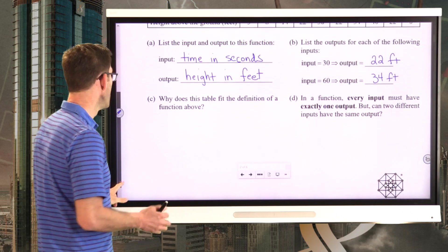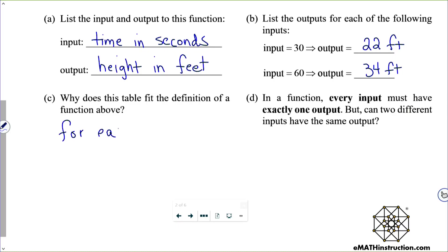Well, it's pretty simple. For each time, input, there is only one output height. Actually, let me keep it consistent. For every time input, there is only one height output.